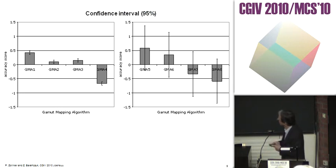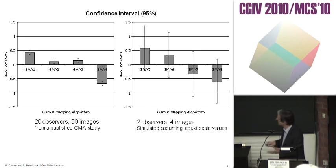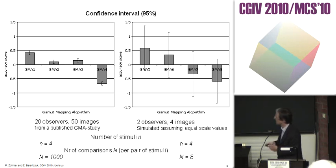Here I have now calculated the confidence interval and you see the difference. On the left we have a public study with 20 observers, 50 images. On the right I just simulated a study with two observers, four images.